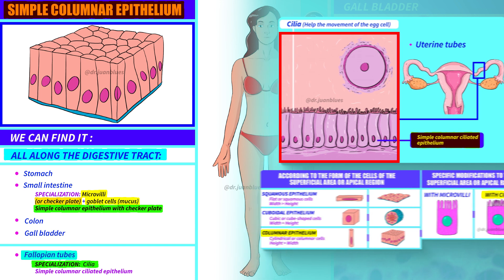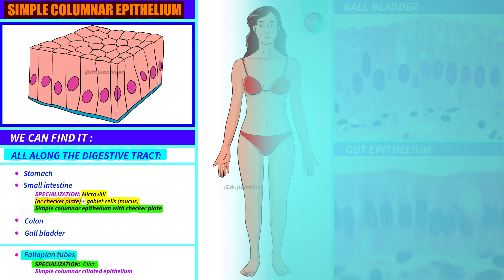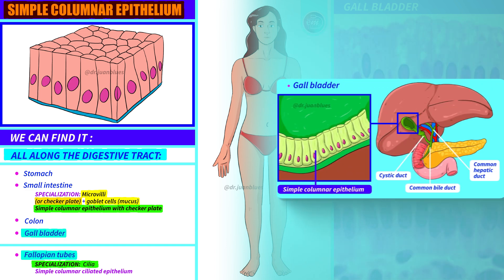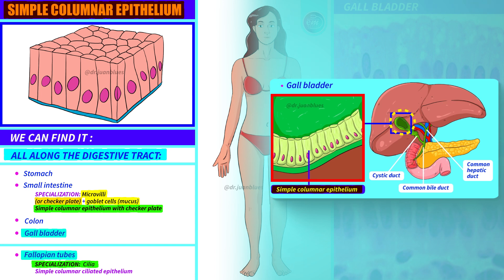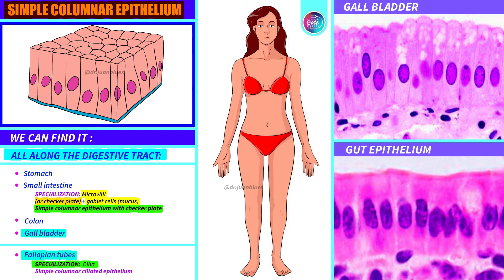We can also find simple columnar ciliated epithelium in the gallbladder. Here we have the gallbladder, and if we enlarge the image, we can observe how its walls are covered by a single layer of cells with a cylindrical shape — simple columnar epithelia. Here I complete the summary with two real histological sections of the gallbladder and gut epithelium: simple epithelium with cylinder-shaped cells.